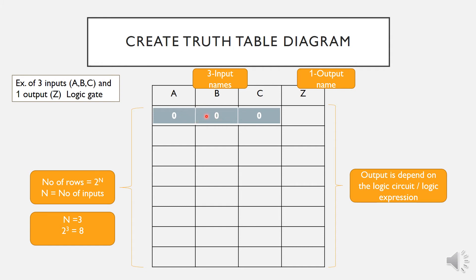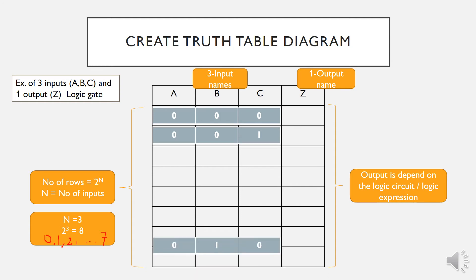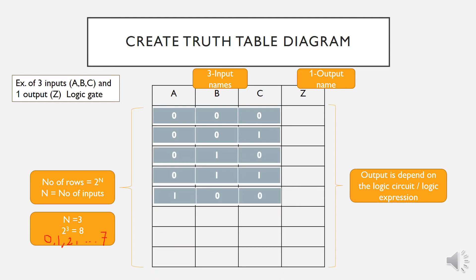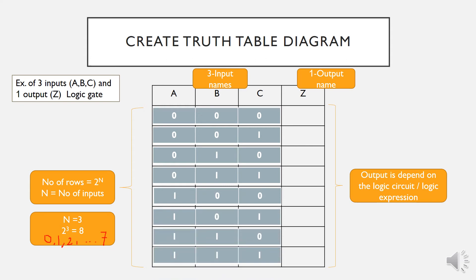Now let's insert each input value for each row. We start with the combination of the lowest count. Since we have eight combinations, we start the count from zero, one, two, all the way up to seven — so the total is eight. In binary with three bits, zero is represented as 000, and then we count up: one, two, three, four, five, six, and seven.